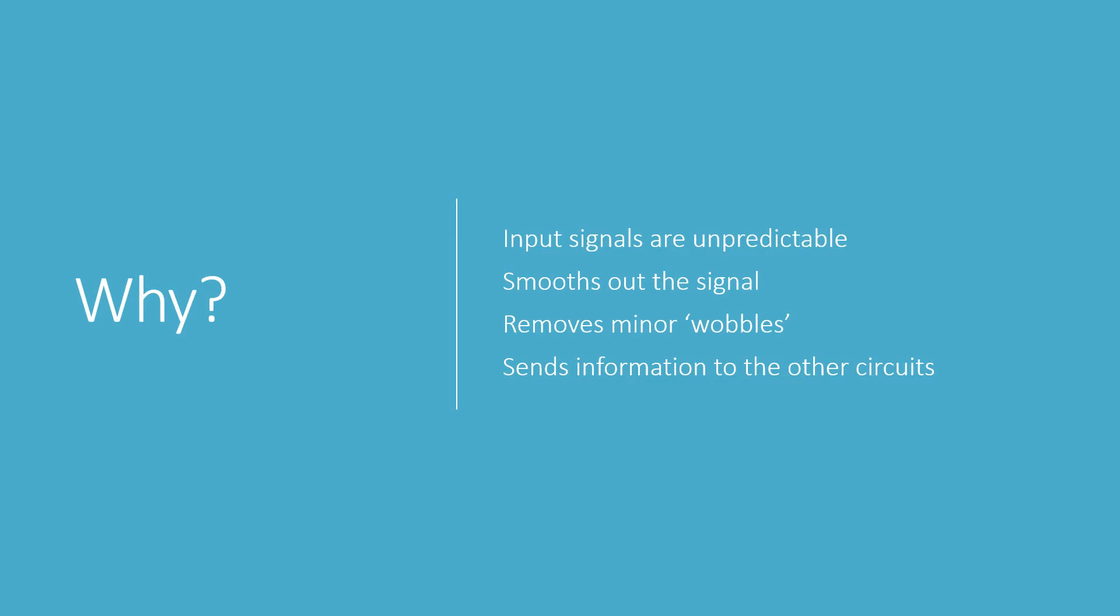Why do you do this? Well, input signals are unpredictable. The events in the real world can happen at any time. Whereas the computer can only process things in time with its own internal clock. So, the D-type flip-flop smooths out the input signal. It removes those little wobbles that can occur. And it sends information to the other circuits of the computer at exactly the time that they're expecting it.